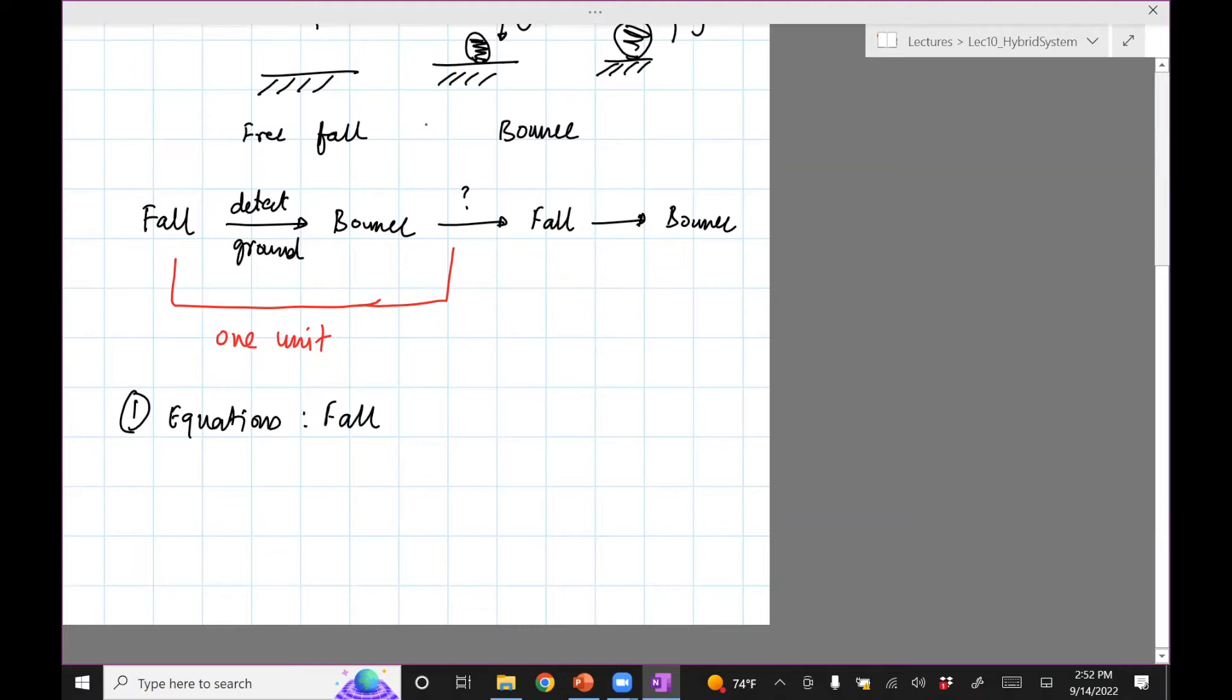We are only doing fall under gravity. So the equation is y double dot equals minus g. That is, assume there's no drag force, just falling under gravity.